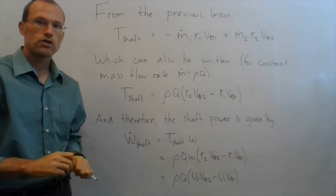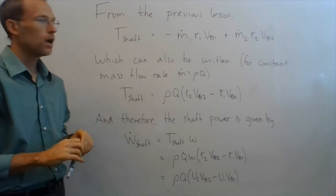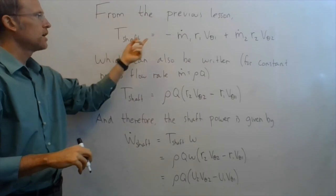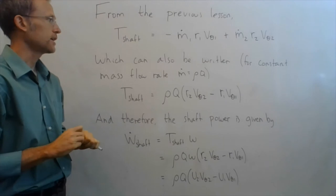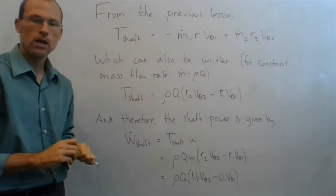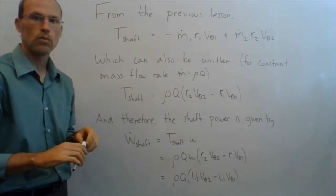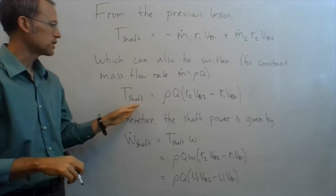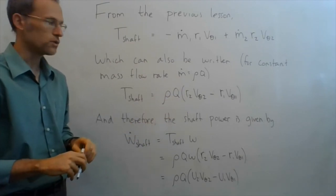In the previous lesson, we did conservation of angular momentum through any turbo machine, so that's still going to apply here. Had this equation that the torque on the shaft is negative m1 dot r1 V theta 1 plus m2 dot r2 V theta 2, and then assuming I have a constant mass flow rate, which I obviously need to have for conservation of mass, I can just call m dot rho times q, so that's m1 and m2, so pull that out, I have my shaft torque is rho times q, r2 V theta 2 minus r1 V theta 1, just rearranging slightly.